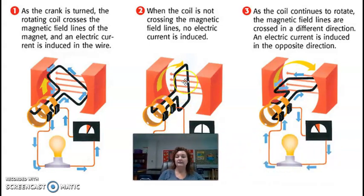And then if we go to the last one, it says, as the coil continues to rotate, the magnetic field lines are crossed in a different direction and electric current is induced in the opposite direction. So notice our arrows. The first time they're going down and around, now they're going down and around the opposite way.